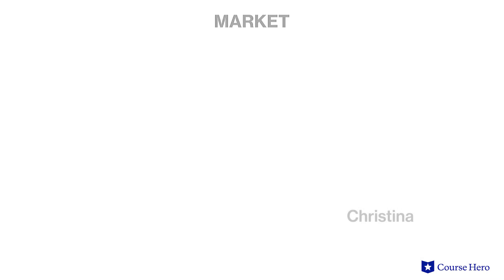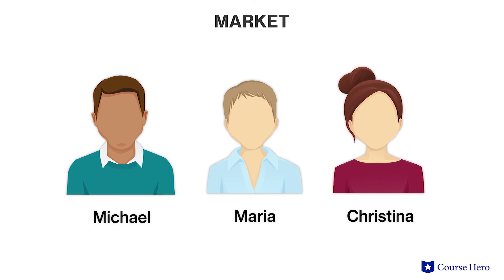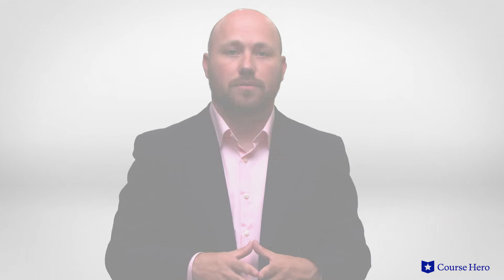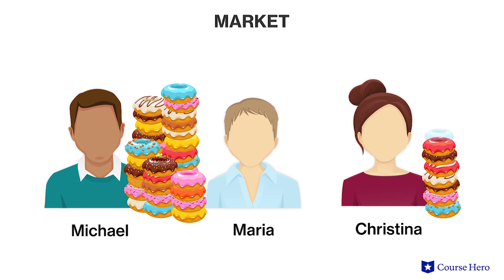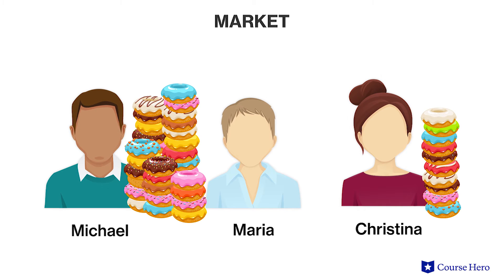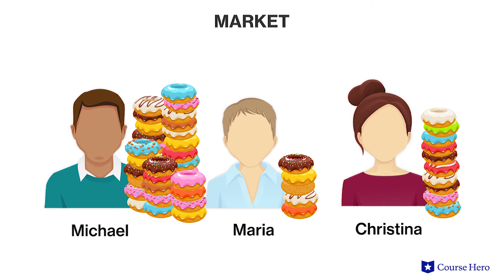Consider a market made up of three potential buyers — Christina, Michael, and Maria — who are all interested in buying donuts. For any particular price, each person will buy a different quantity of donuts. Prices in this market range from $1 to $5. Michael loves donuts and buys three times as many as Christina does at every price point. Maria enjoys donuts, but she is frugal and will only buy half as many as Christina does at every price point.